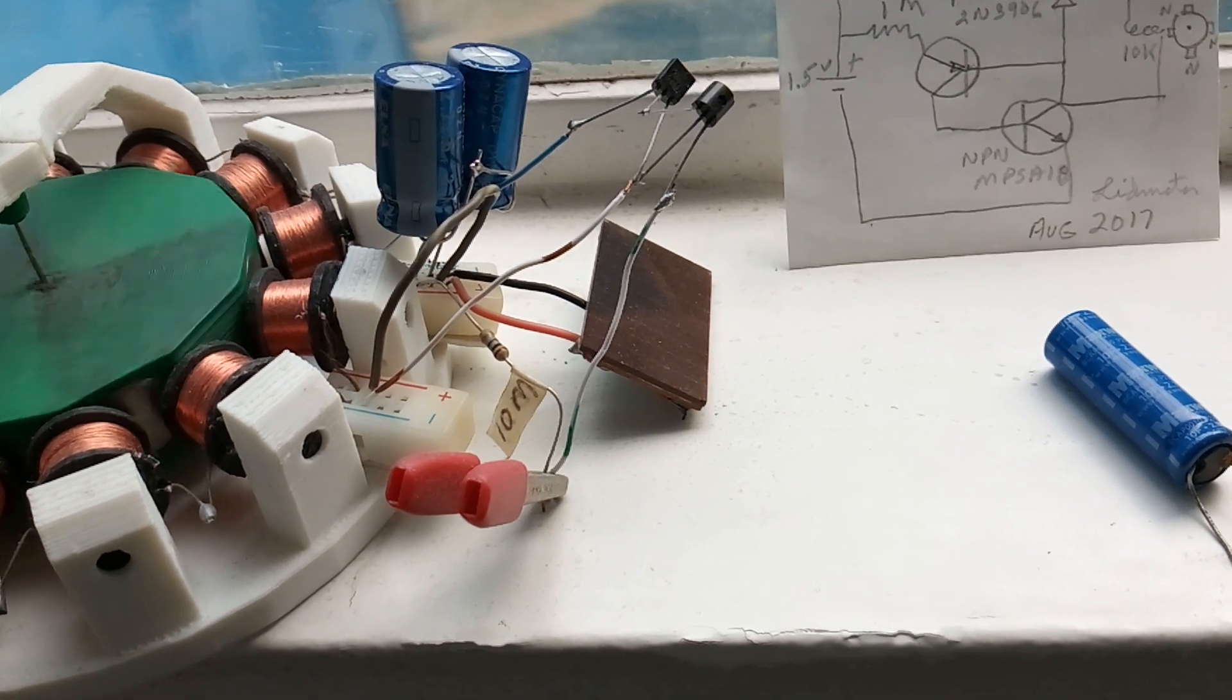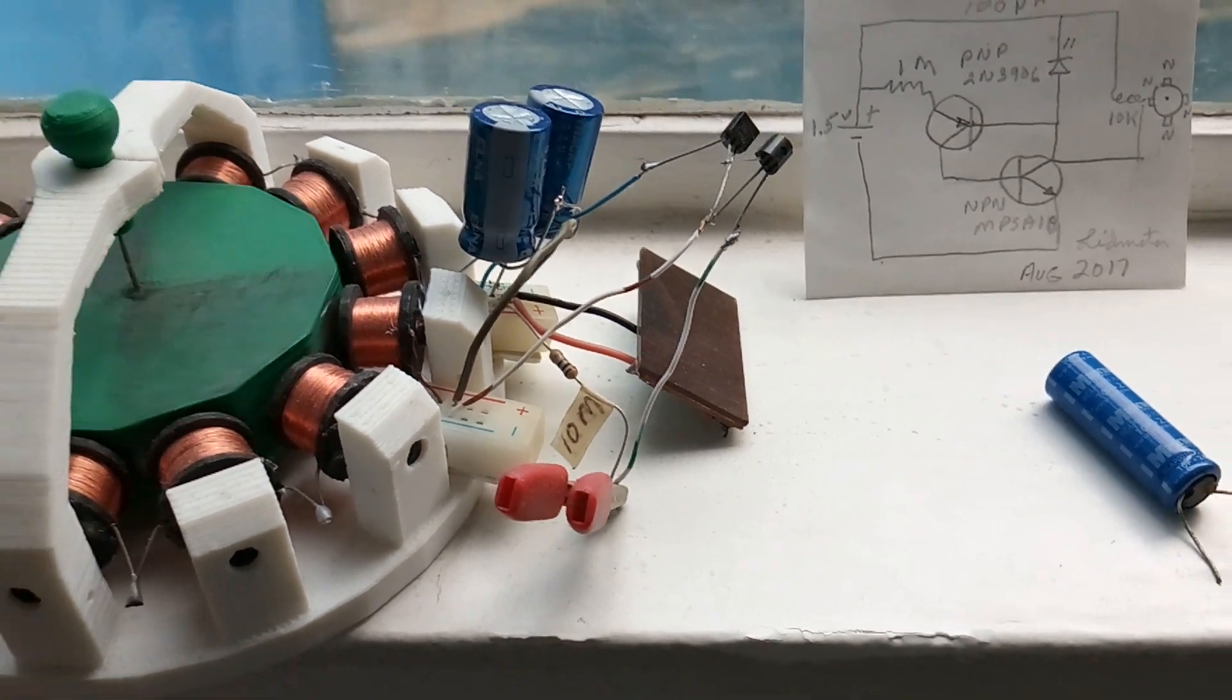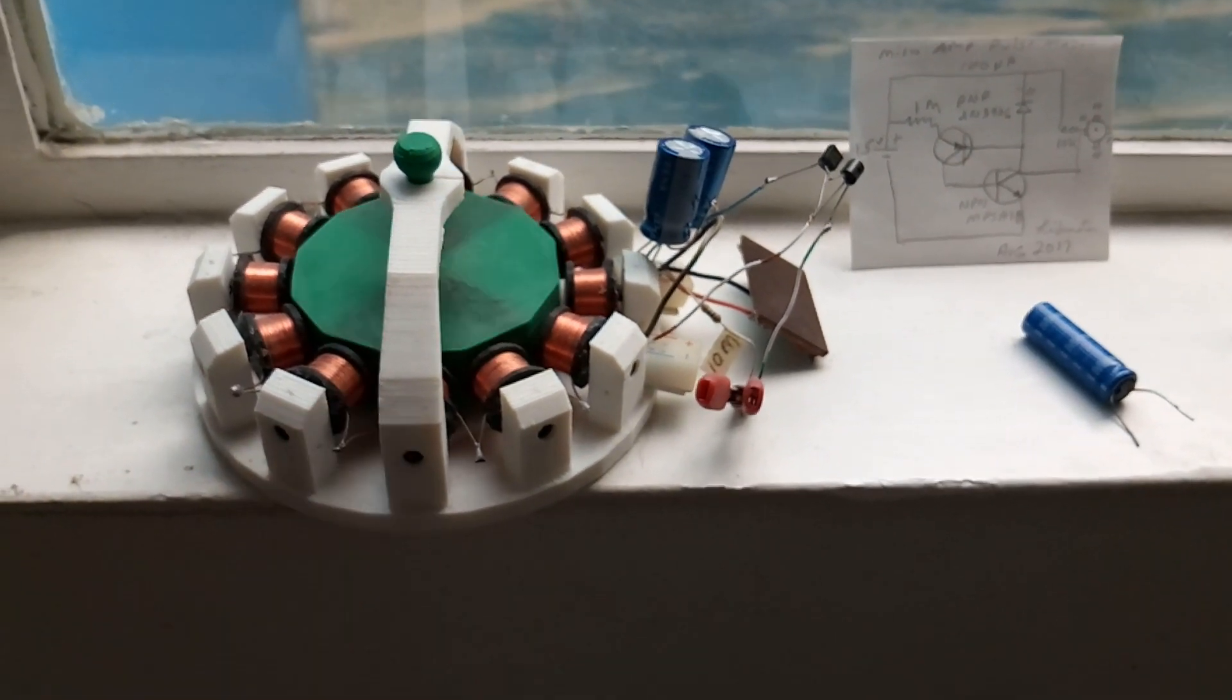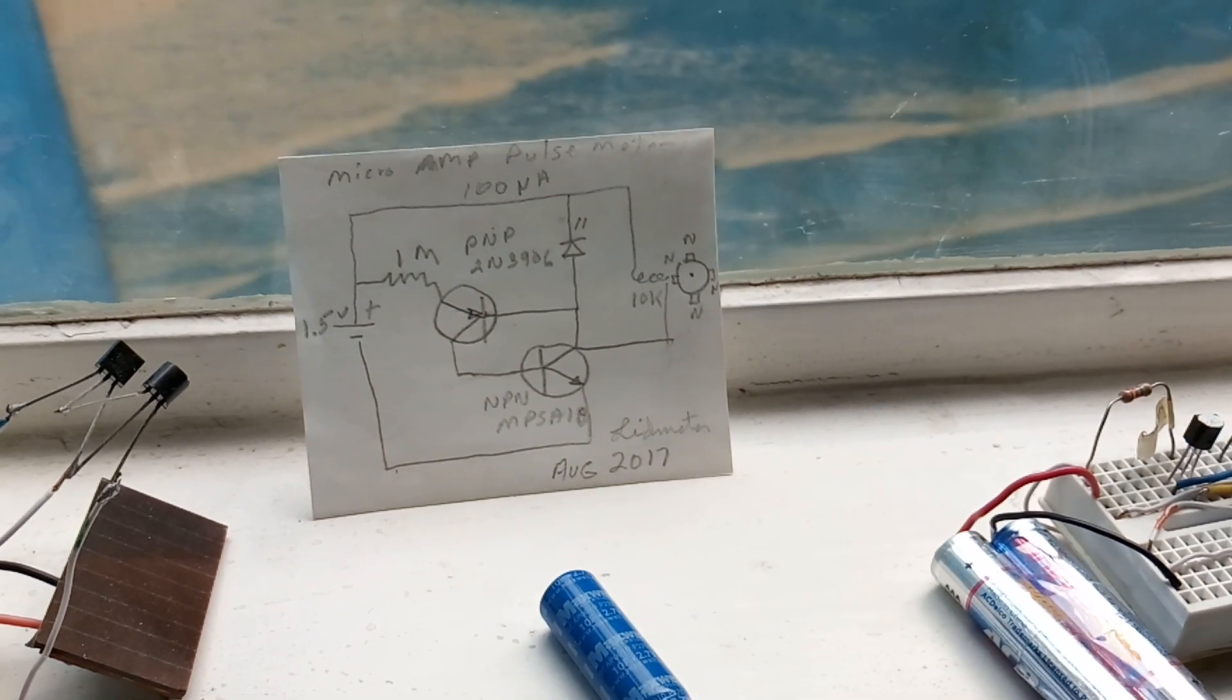It has a blocking diode on the panel so it doesn't drain backwards at night. But this is the most successful one. It is a LaserSaber EasySpin with that circuit on it.